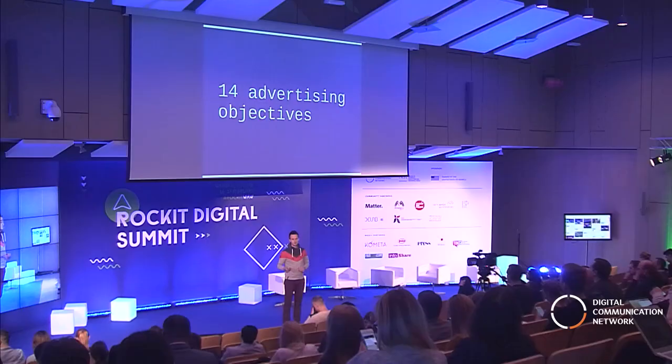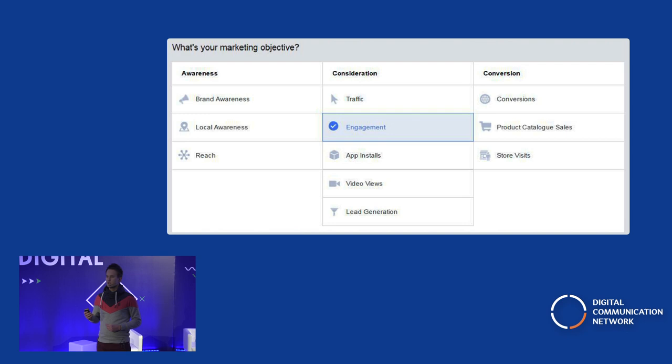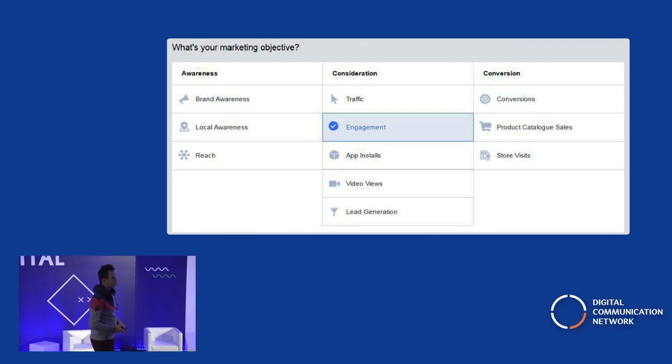For example, on Facebook there are 14 advertising objectives and you need to choose the right one for you. Different campaigns and different objectives are correct in different situations. I said there are 14 objectives, so how come there are only 11 here on the list? Three are basically hidden, so you need to know which one to click to see the rest.